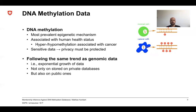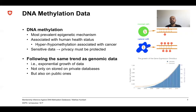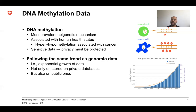The problem is that the amount and availability of DNA methylation data is following the same trend as genomic data. There is an exponential growth of methylation data that is available not only on private databases but also on very public ones for research purposes. The Gene Expression Omnibus, shown on the right-hand side, is an example of this exponential growth in the number of samples available online.